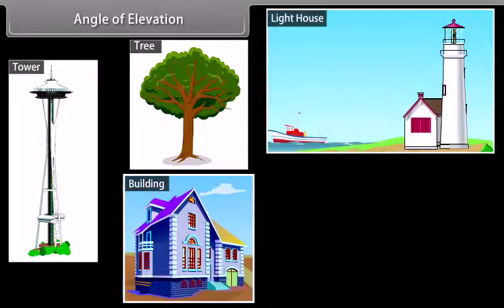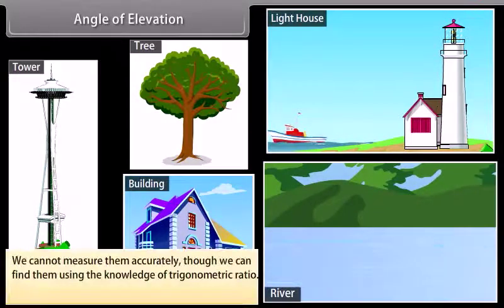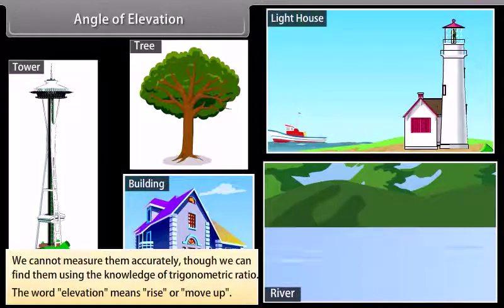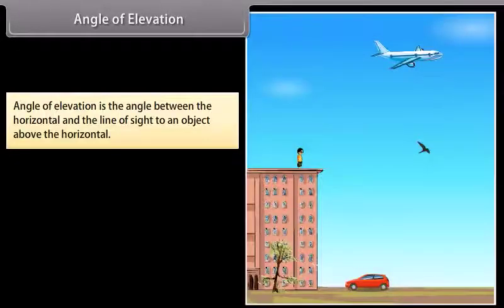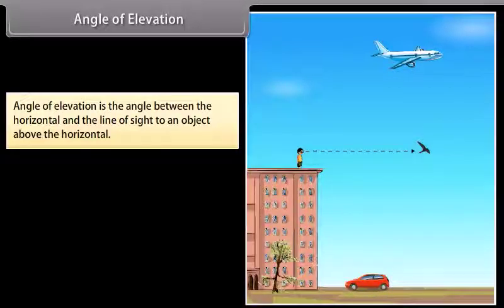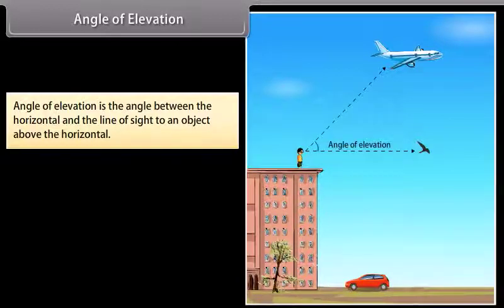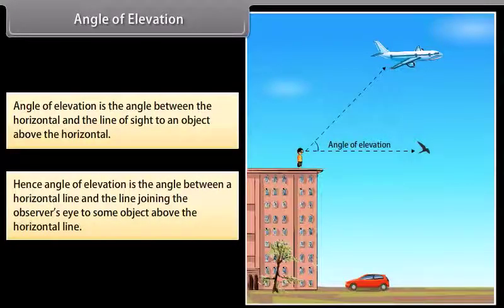Sometimes we are required to find the height of a tower, tree, building, and distances of a ship from a lighthouse, width of a river, etc. We cannot measure them accurately, though we can find them using the knowledge of trigonometry ratios. The word elevation means rise or move up. Angle of elevation is the angle between the horizontal and the line of sight to an object above the horizontal. In this picture, an observer is standing at the top of a building and looking straight ahead at birds in the horizontal line. The observer must raise his eyes to see the airplane, which is in the slanting line — this line is also called the line of sight. The angle formed between the two lines is called the angle of elevation. Hence, angle of elevation is the angle between a horizontal line and the line joining the observer's eye to some object above the horizontal line.